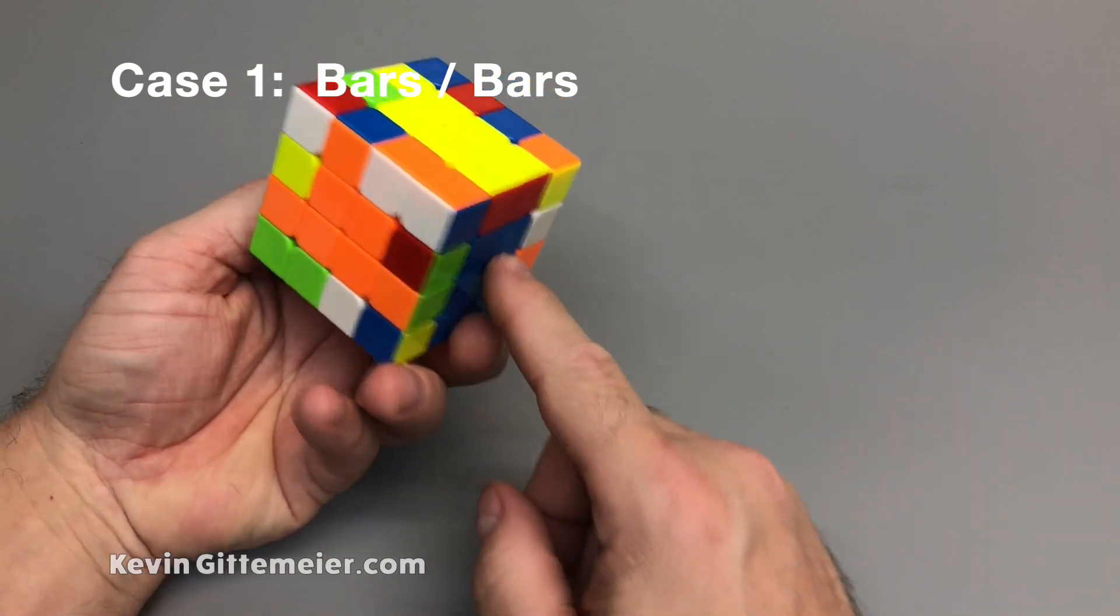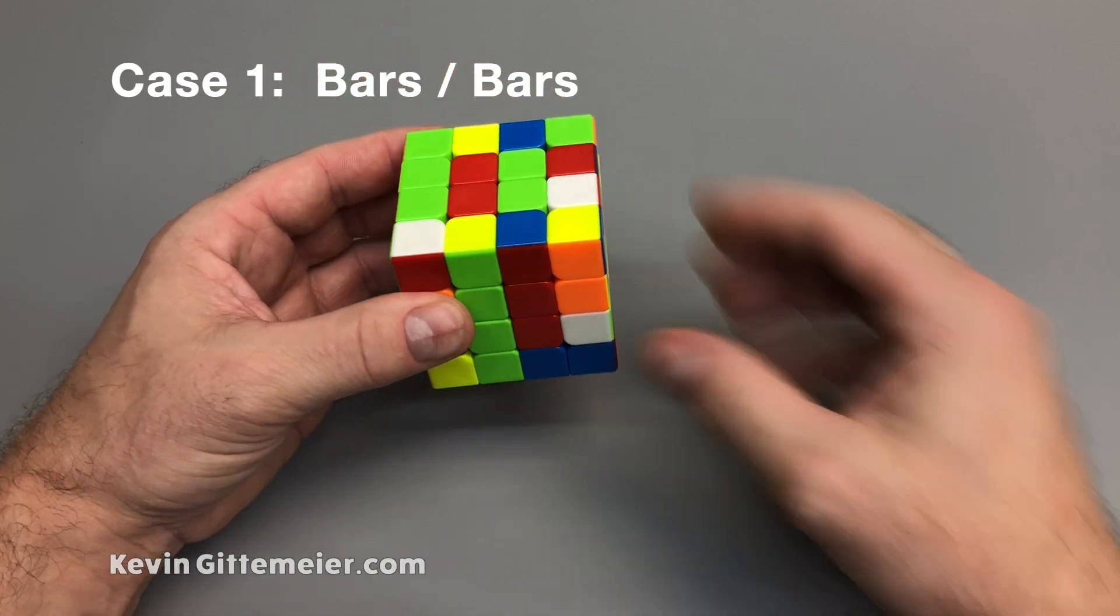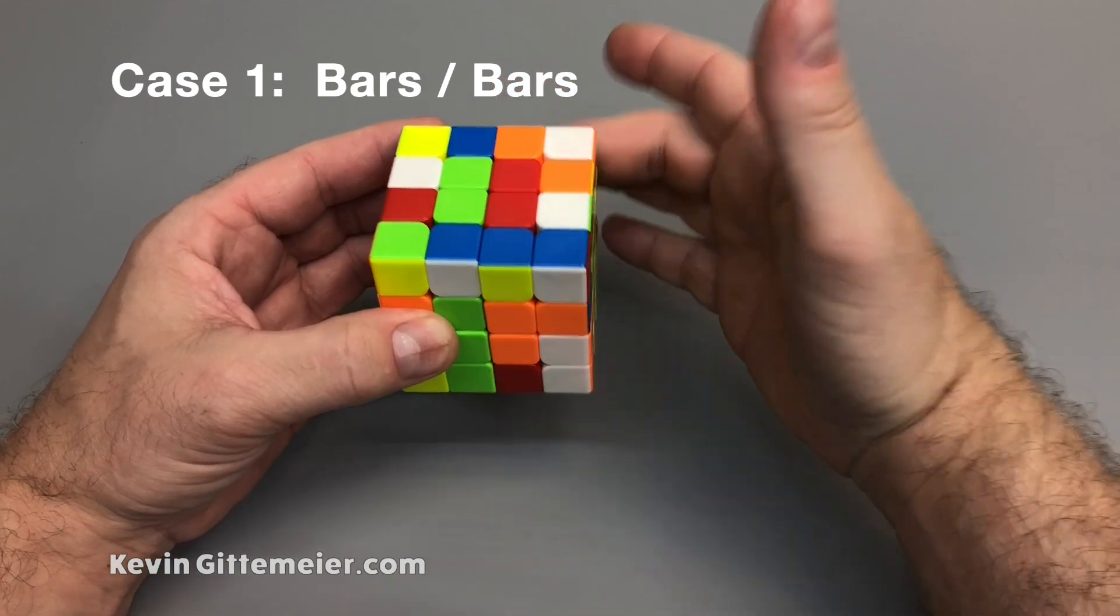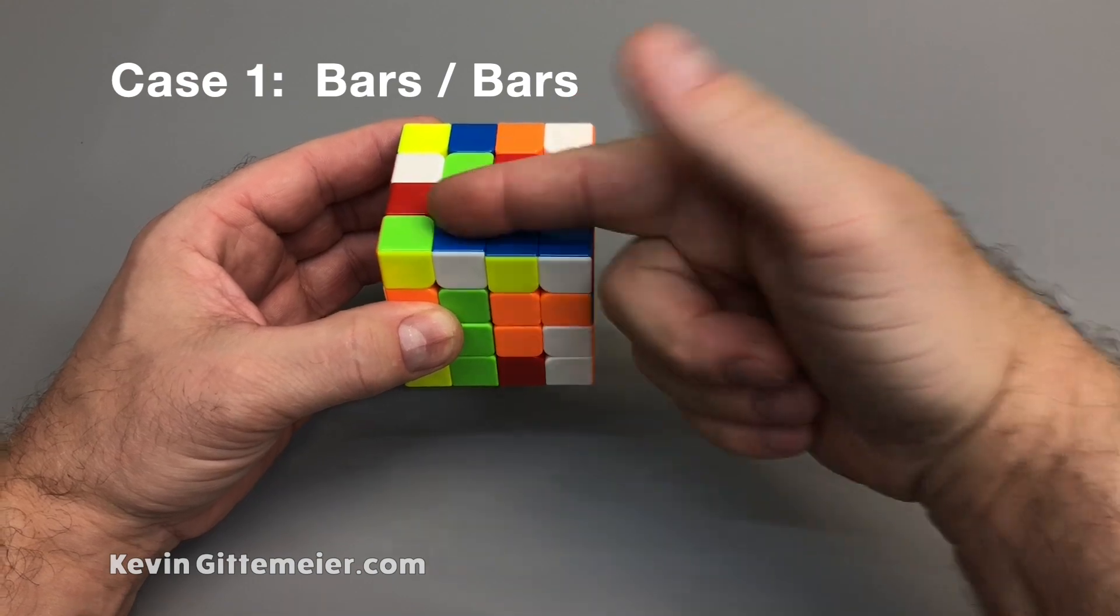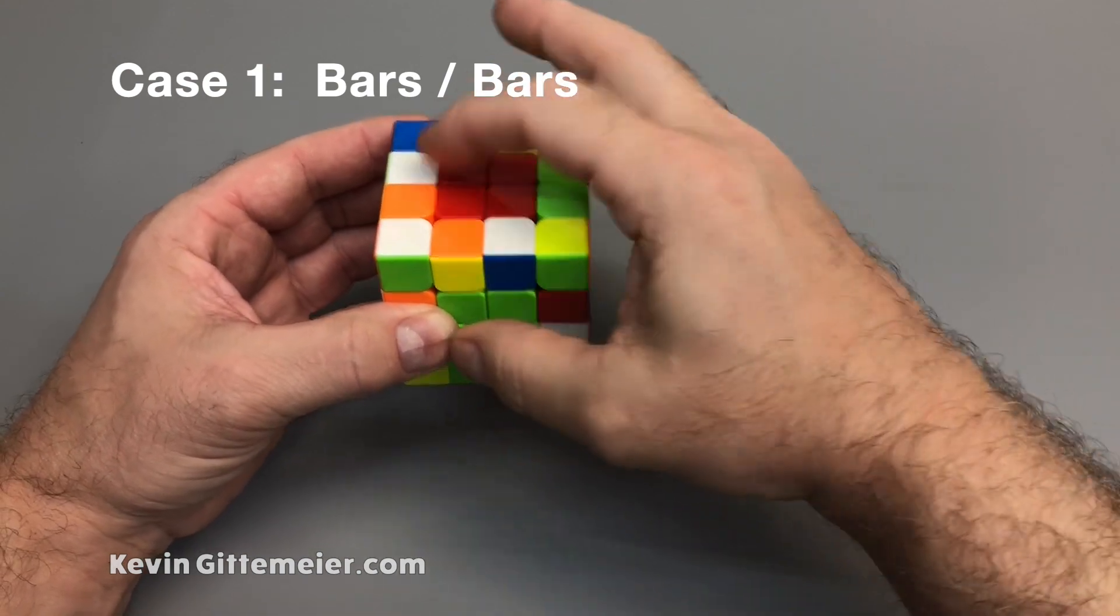So, following our BOGR pattern—blue, orange, green, red—we know that this needs to be red. So we put both red bars in the same slice, slice up moving this good bar out of the way, then we move this solved bar over here, and when we slice back, everything's solved.